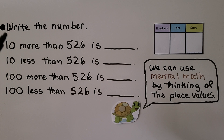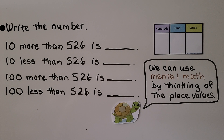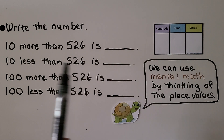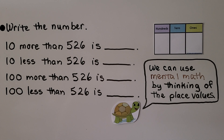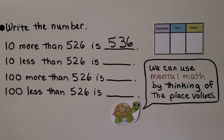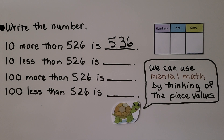Here, it's telling us to write the number 10 more than 526. We can use mental math by thinking of the place values. 10 more — we have a 2 in the tens place, so we add one more 10. That would be 536. For 10 less than 526, we take away one of these tens. If you said 516, you're right. We have 1 less 10.